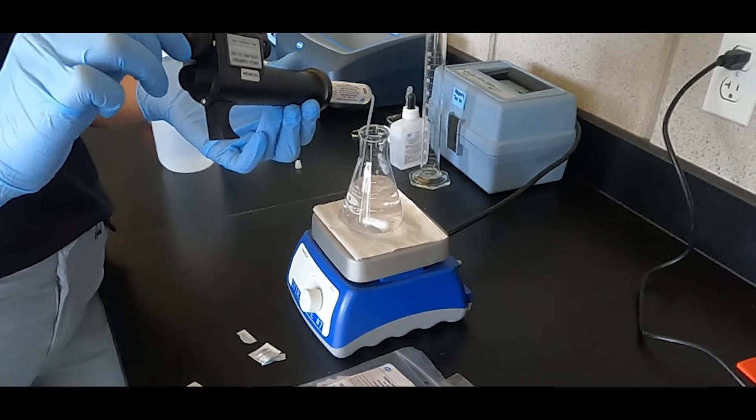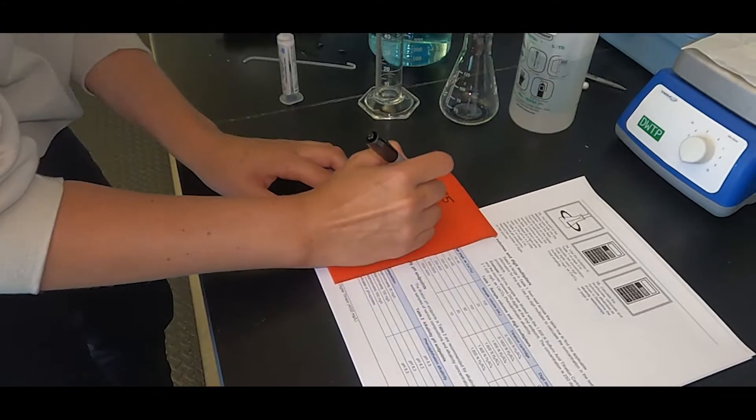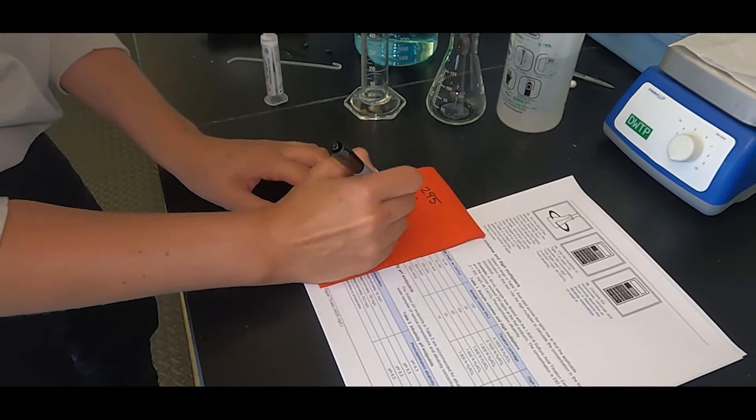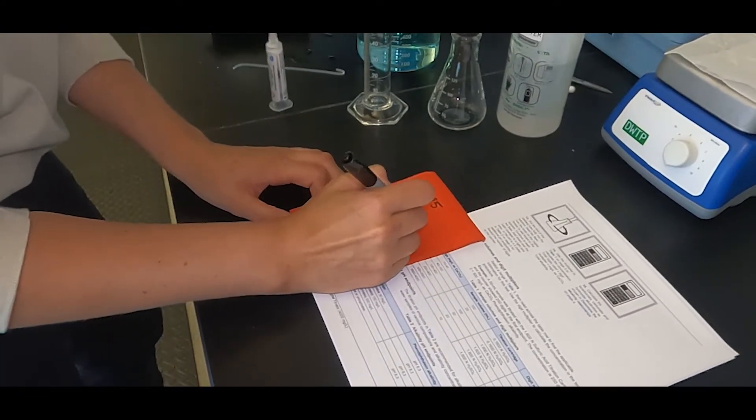Record the value displayed on the digital titrator and use the multiplier in the table to calculate the concentration as milligrams per liter of calcium carbonate.